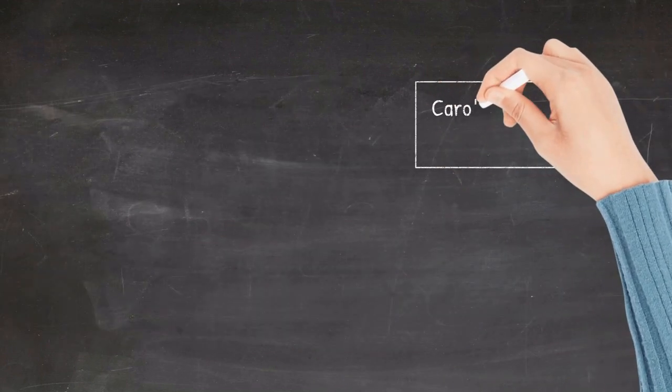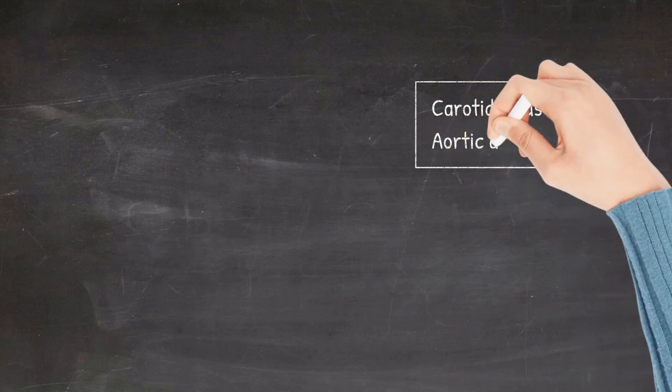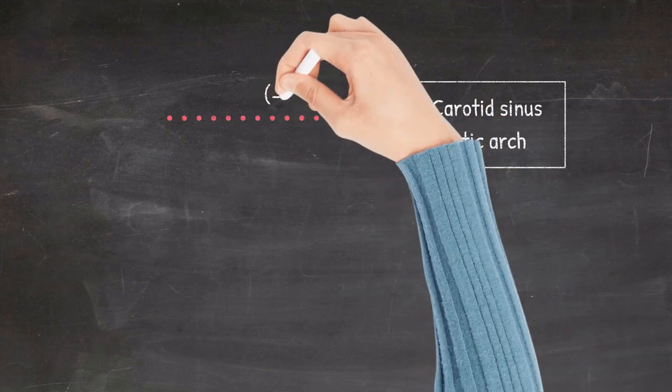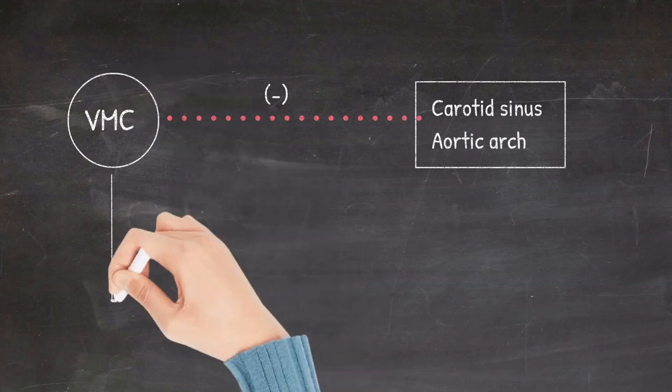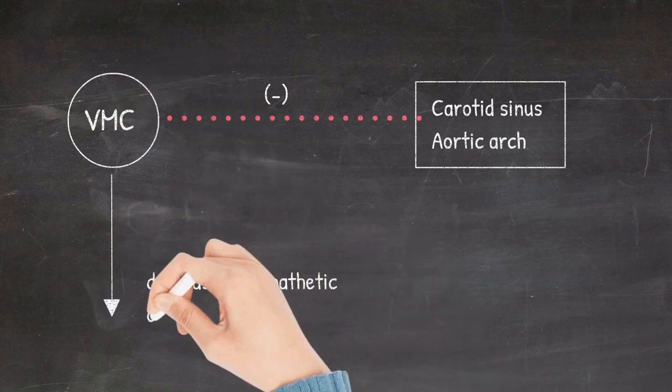Conversely, when there is increased stretch of the carotid sinus and the aortic arch, the vasomotor center is inhibited, and thus reducing the central sympathetic outflow and hence reducing the blood pressure.